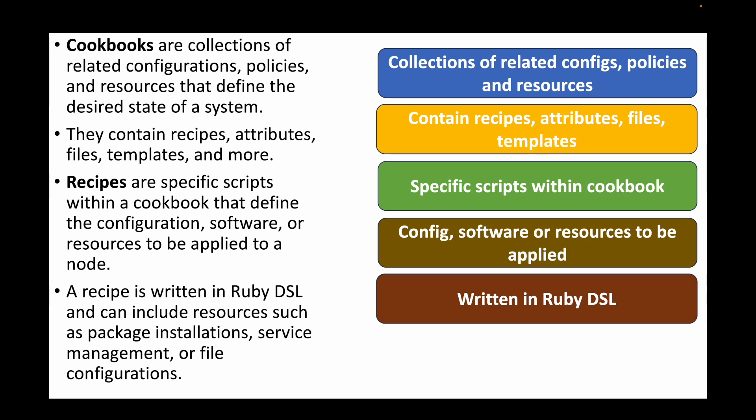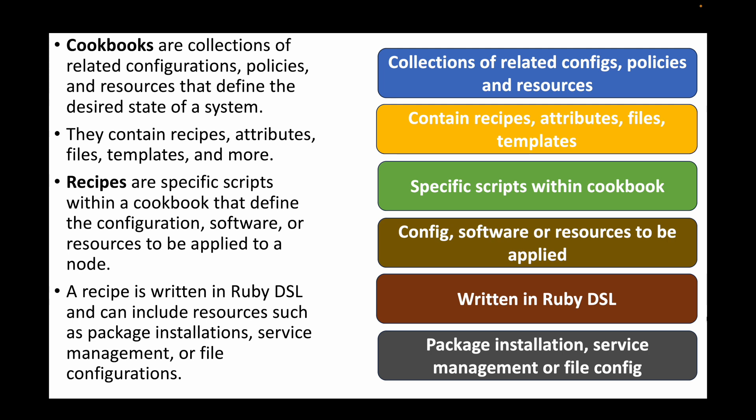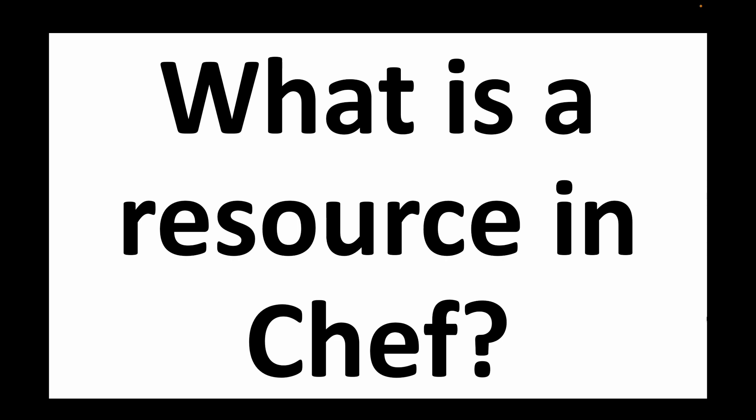A recipe is written in Ruby DSL and it can include resources such as installing packages, managing services, or working with file configurations. So a cookbook is your collection of recipes, and recipes are your individual tasks or instructions that you want to execute on the remote machines.